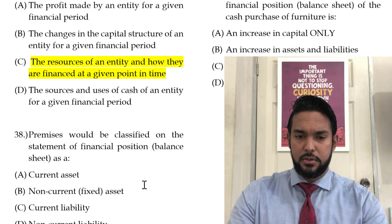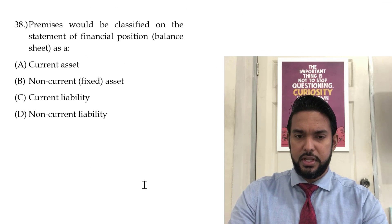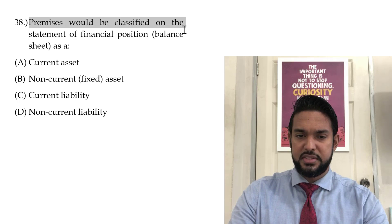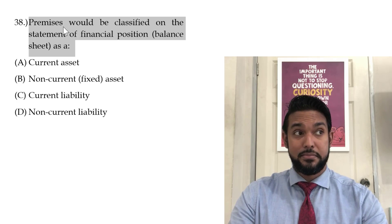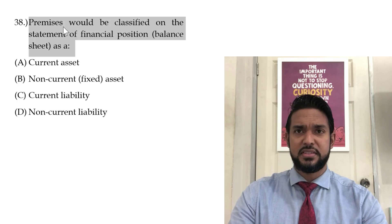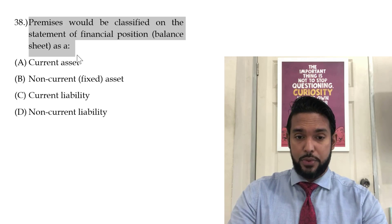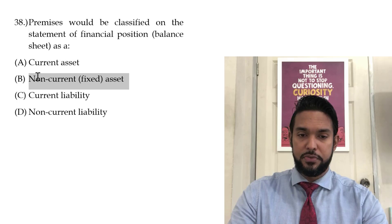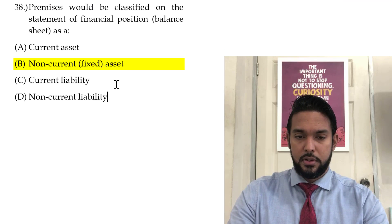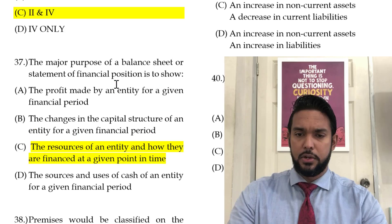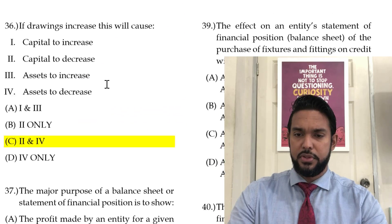Number 38: Premises will be classified on a statement of financial position as what? Premises is like land and buildings — it's an asset and it's long-lasting. So I would say fixed asset or non-current asset. That would be option B — non-current or fixed asset for sure.